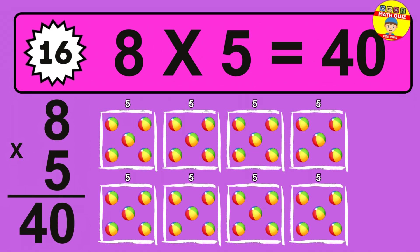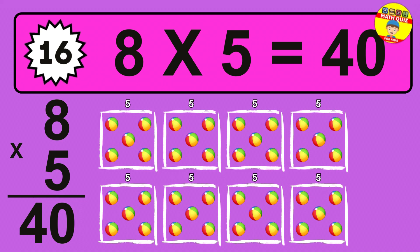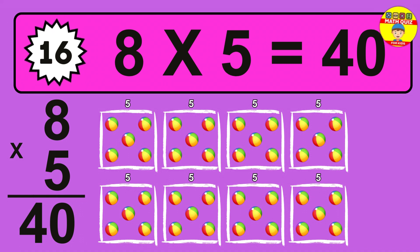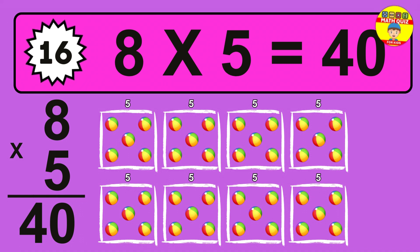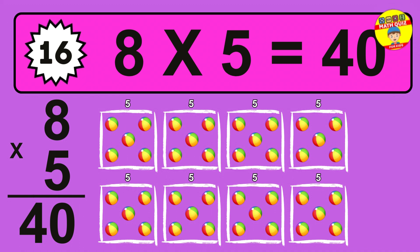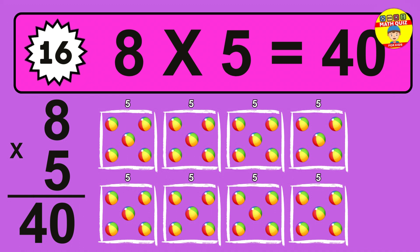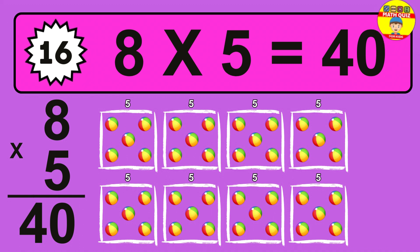Question 16. 8 times 5 equals what? The answer is 8 times 5 is 40. To calculate, we have 8 groups with 5 balls each one. So, how many balls do we have? 40 balls.